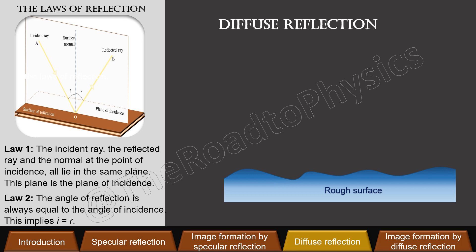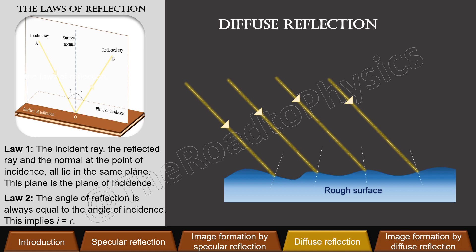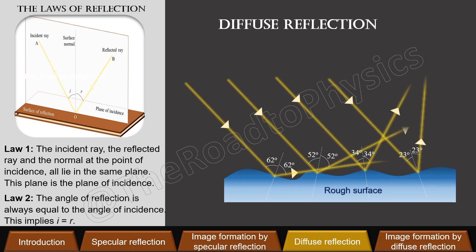Again, the second law of reflection explains why a rough surface scatters a parallel beam of light incident on it. In reflection of a parallel beam of light from a rough surface, the angle of incidence will differ for each ray, as the surface normals are different for different rays. Thus the angle of reflection is different for each incident ray. This is why a rough surface scatters light in all directions.